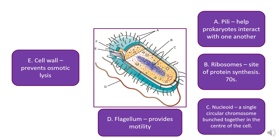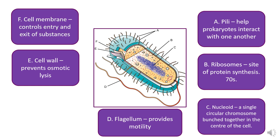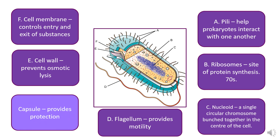The cell wall is the thicker outer layer. It prevents osmotic lysis — the bursting of the cell as a result of water moving into it. So if you placed a prokaryote into pure water, it would fill with water and swell and become turgid, but the cell wall stops it from bursting. The cell membrane, which is very similar to the eukaryotic cell membrane, controls the entry and exit of substances through various methods.